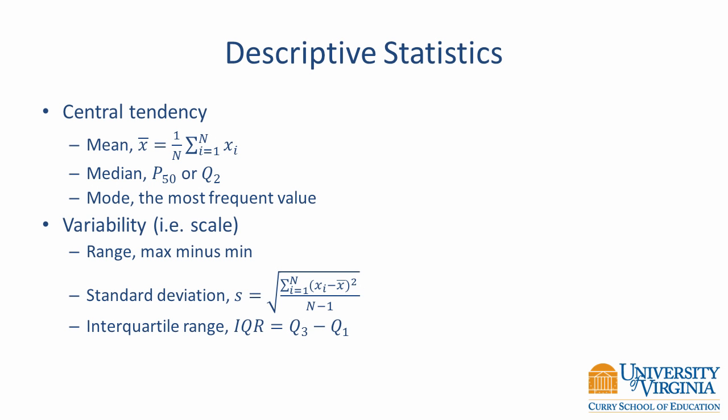Although central tendency tells us about the center of the distribution, it does not accurately represent every value. Participants can have values quite a bit lower than the mean or substantially greater than it. As such, we would also like to know about a distribution's variability. The dispersion or spread of values is quantified through the range, standard deviation, or interquartile range. The range is the maximum minus the minimum value, and the interquartile range is the difference between the third quartile and the first quartile.